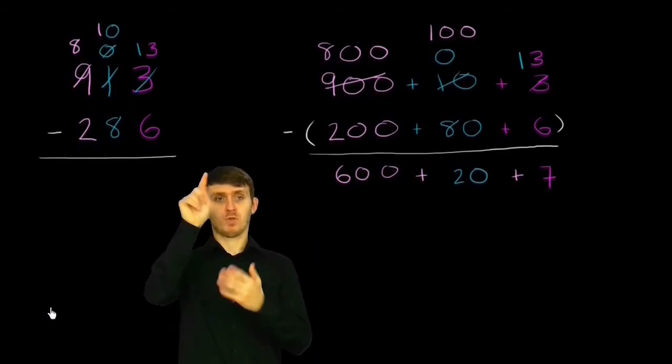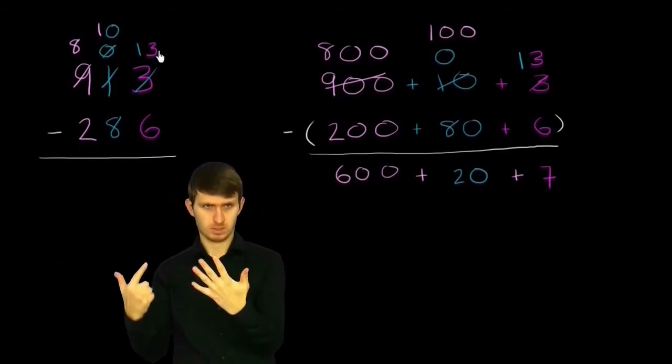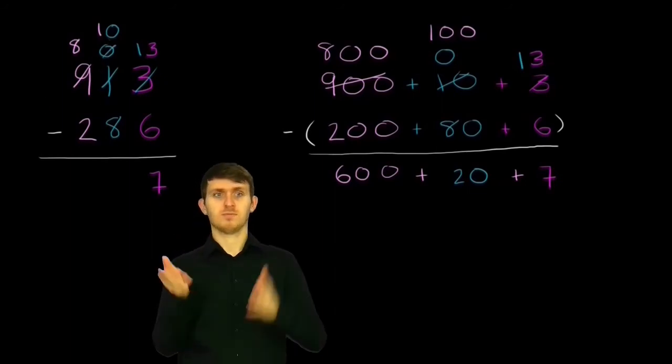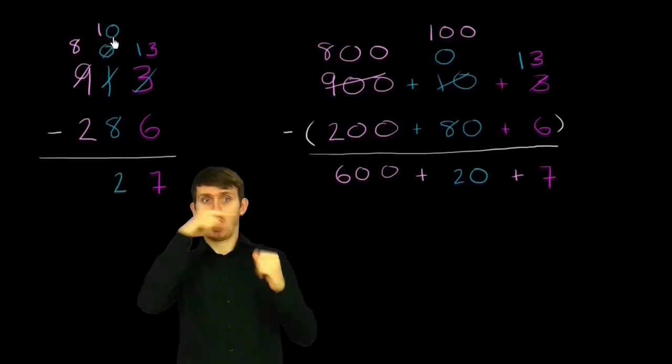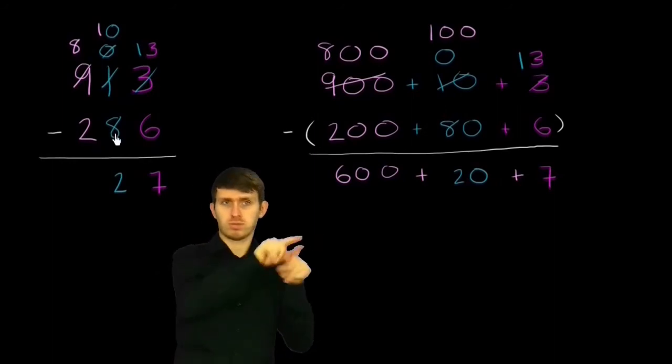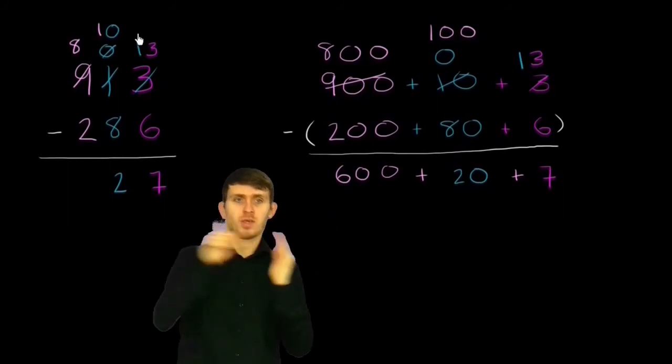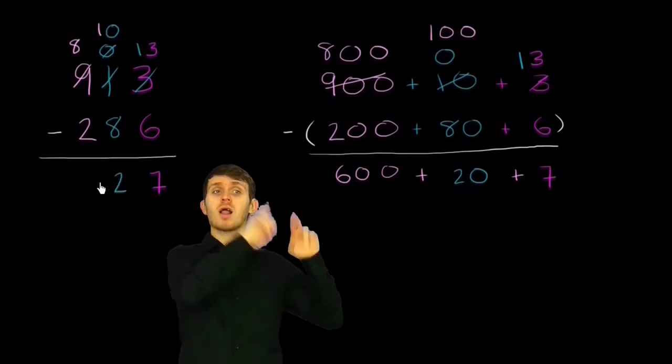And so now we are ready to subtract. 13 minus 6 is 7. 10 minus 8 is 2. Remember, this is really 10 tens minus 8 tens to get 2 tens. 10 tens minus 8 tens to get 2 tens. 100 minus 80 to get 20.